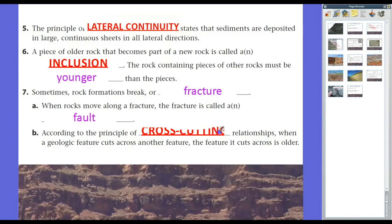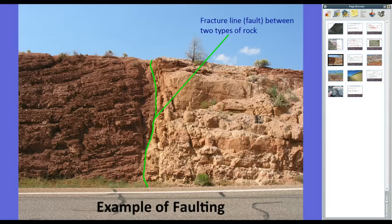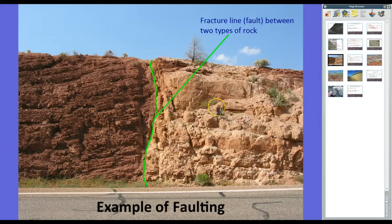According to the principle of cross-cutting relationships, the last of these superposition-related principles, geologic features that cut across another feature — and that cutting movement is often a fault line — indicate that the feature being cut across is older. Here's an example on the side of a road; you can really see this well out west or in mountainous regions. We have the actual fault line itself: on one side you have these sedimentary rocks, on the other side a completely different sedimentary rock, and along this line the two rocks are moving. Obviously that fracture line becomes a fault line, and the rock being cut across is the older one.